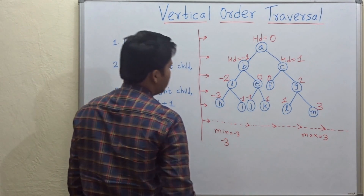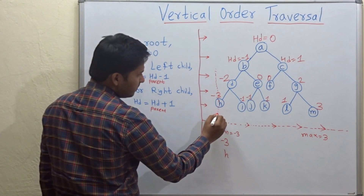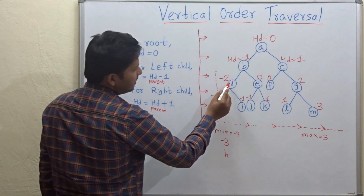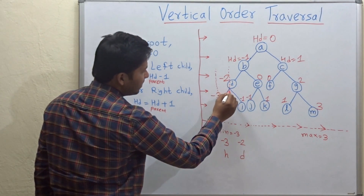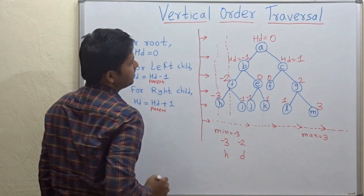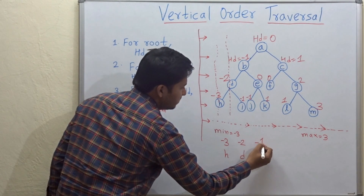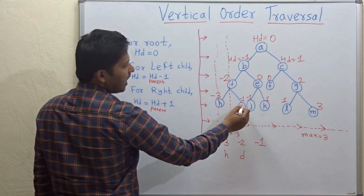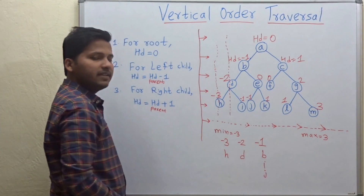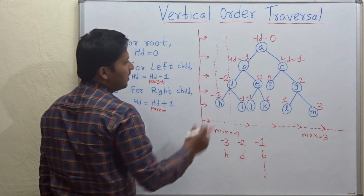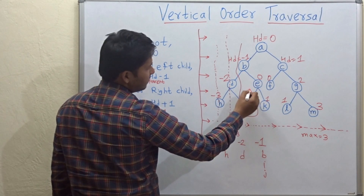The first vertical line is for distance minus 3, where h is the node. For minus 2, d is the node, forming the second vertical line. For minus 1, there are three nodes: b, i, and j. So b, i, and j form the vertical line for distance minus 1.